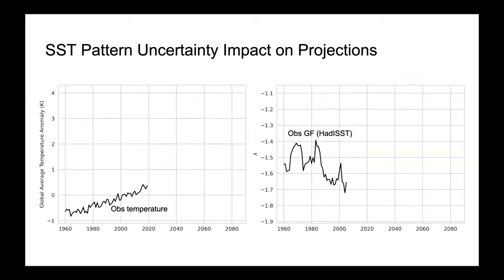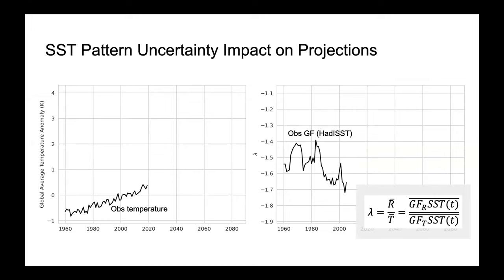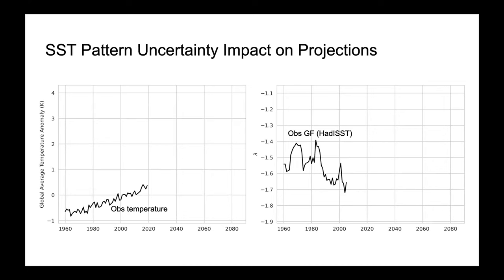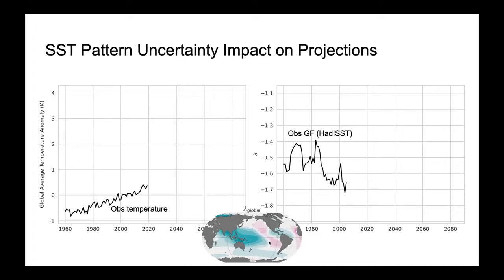Plotting temperature on the left and feedback on the right, starting with observations from HadCRUT and HadISST, we convolve the HadISST pattern with the radiative and temperature Green's functions, then do a 30-year sliding linear regression to get lambda. This corroborates recent research showing that the global mean feedback has been decreasing recently, because the East Pacific hasn't been warming as much as expected and may have been cooling slightly, so most warming has been taking place elsewhere, leading to a more negative global mean feedback.